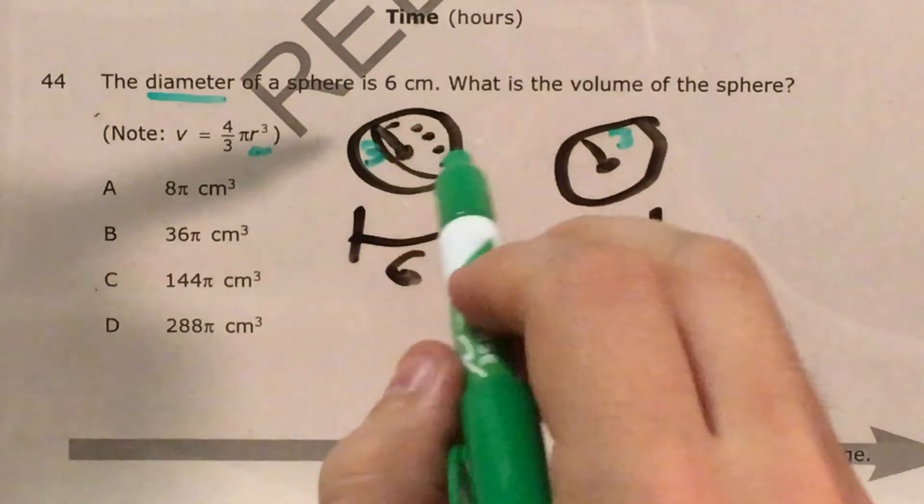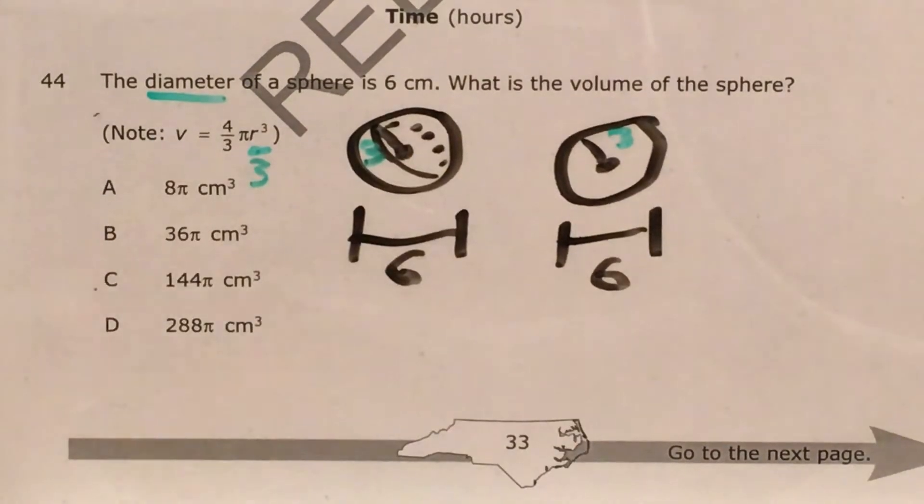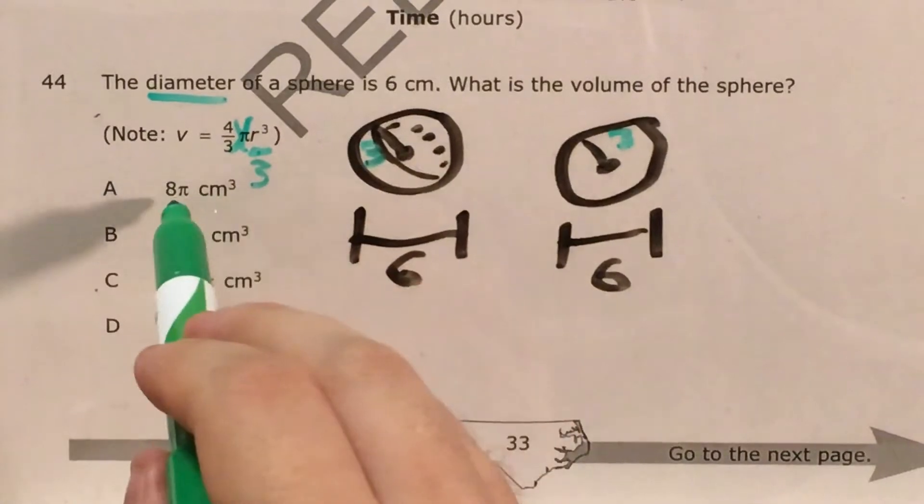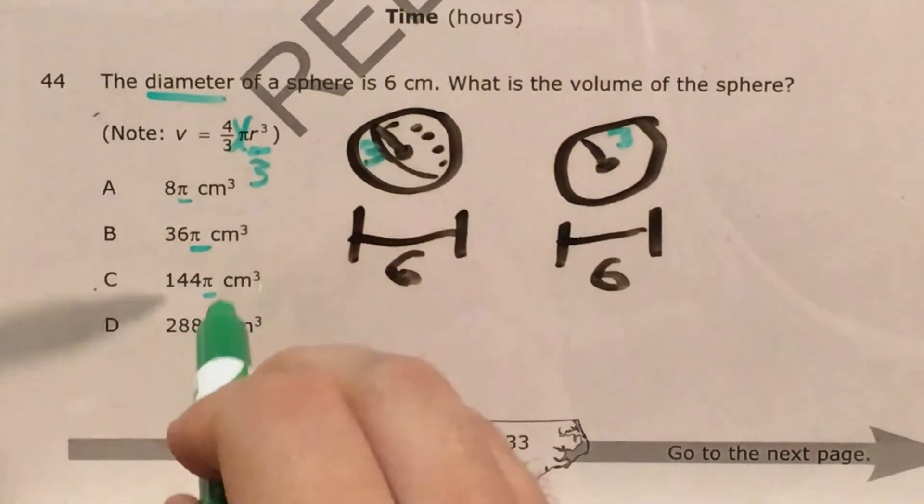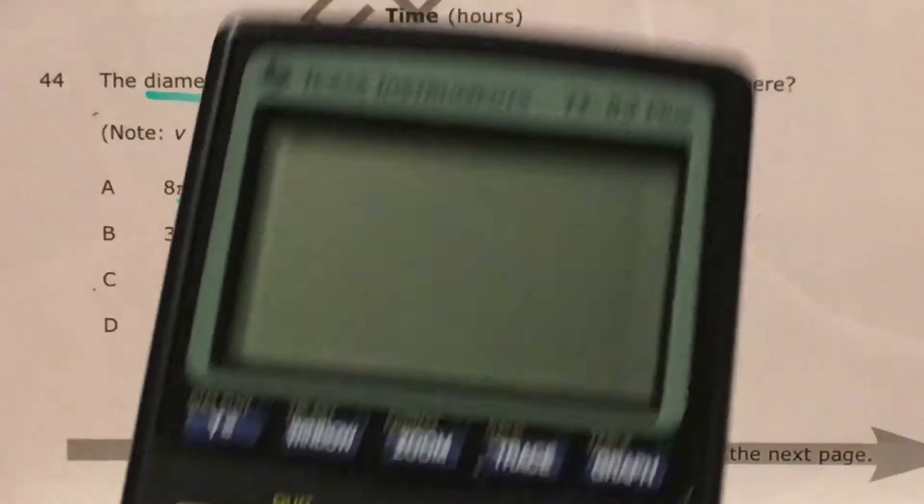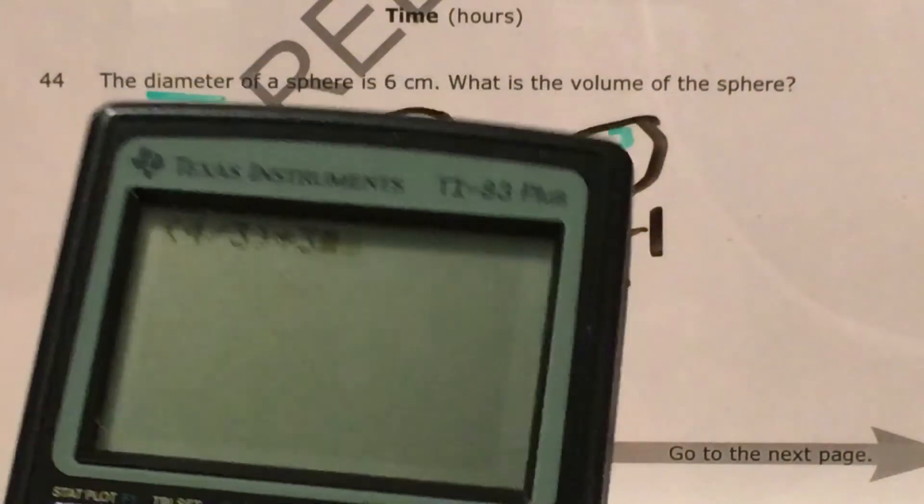It'll be the same thing for the sphere, which means that now I can plug in three for my radius. And at this point, I'm actually going to just ignore pi when I type this in my calculator, since all my answers had numbers that were being multiplied by pi. So I'm just going to go ahead and try to find four thirds times three cubed.